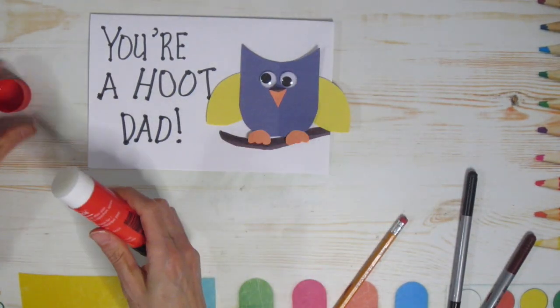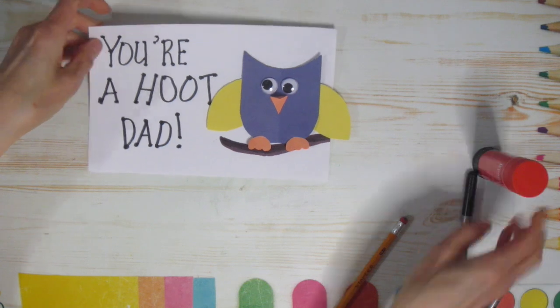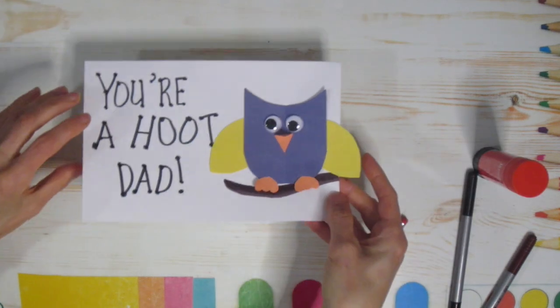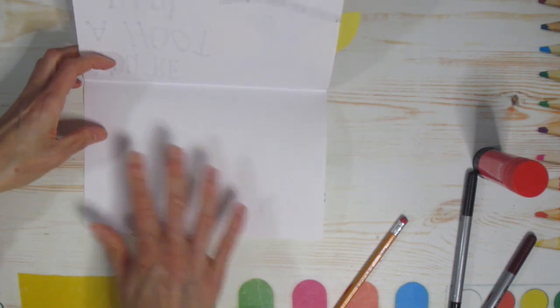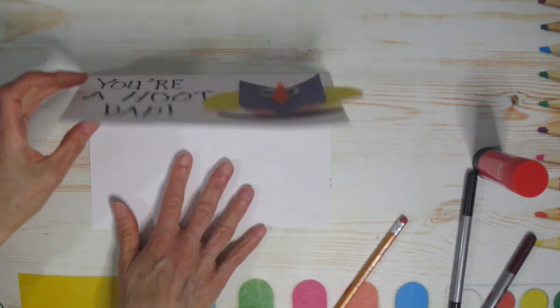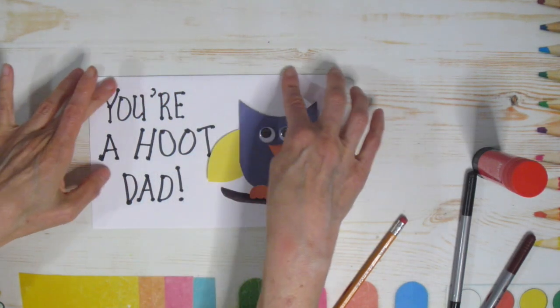And once you have your little owl all assembled, you can glue it right on your page. Now you've got your Ahoot Dad. Your card is ready to go. You can open it up and like I said earlier, you can write a message. You can draw a picture and a poem, anything that you would like on the inside and you have your card.